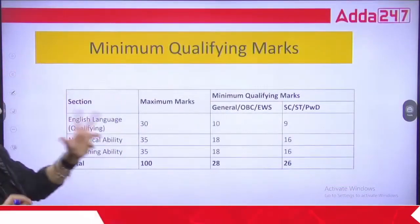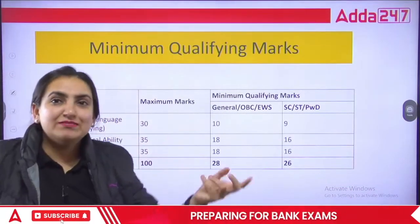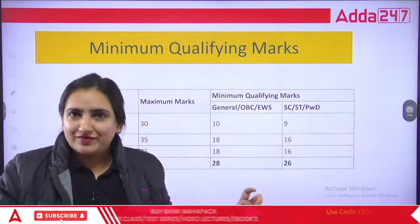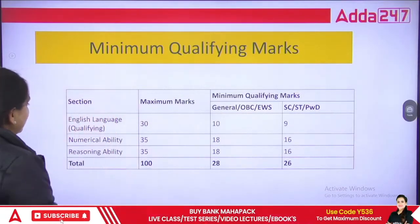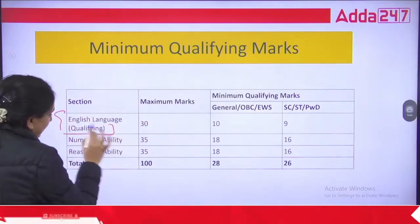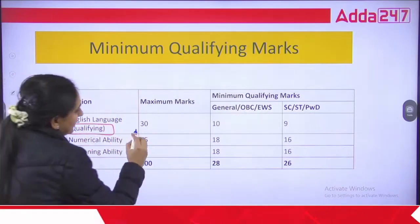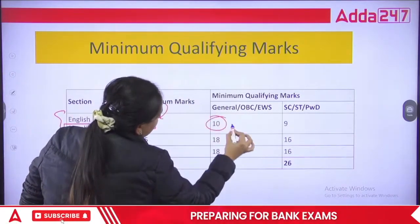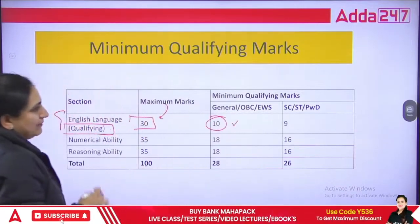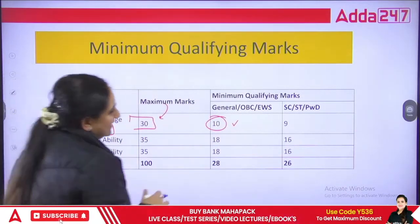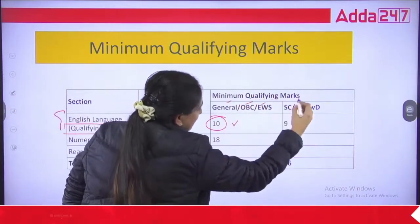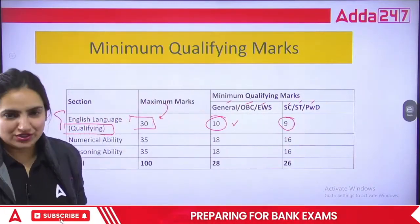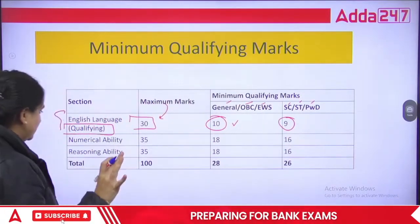Regarding minimum qualifying marks — this English part is qualifying in nature. For the English language section, which is qualifying, there are 30 questions and 30 marks. The minimum qualifying marks are 10 marks for General, OBC and EWS categories, and 9 marks for SC, ST and PwD categories.